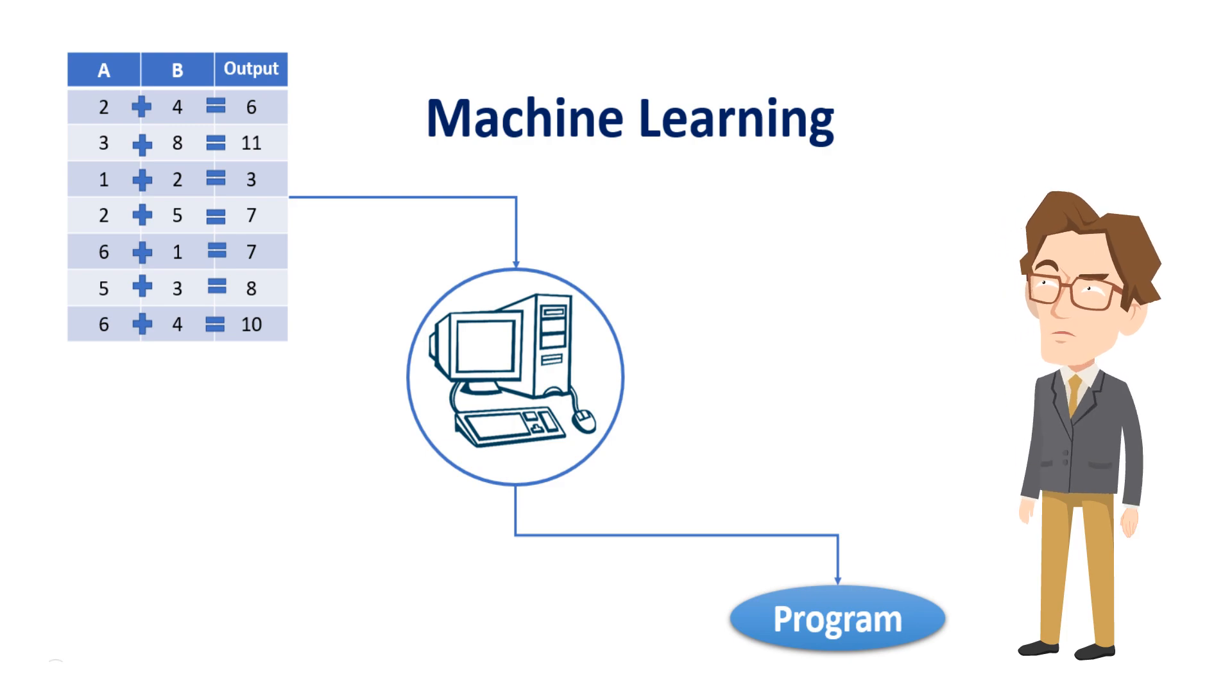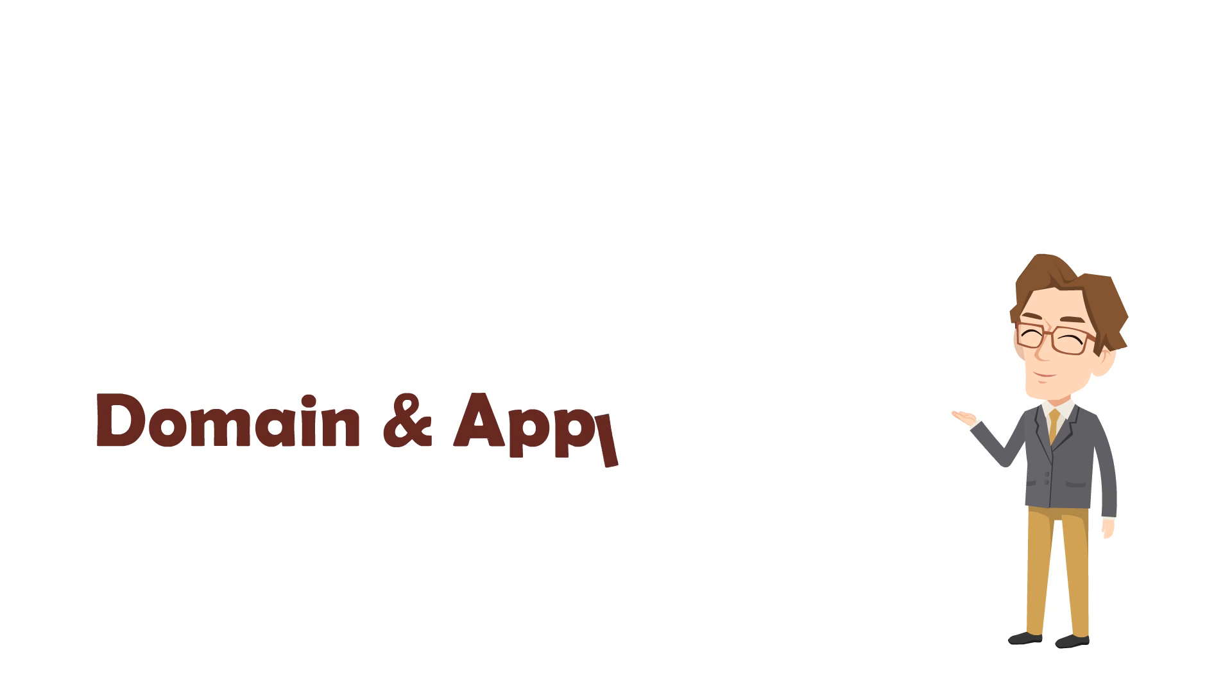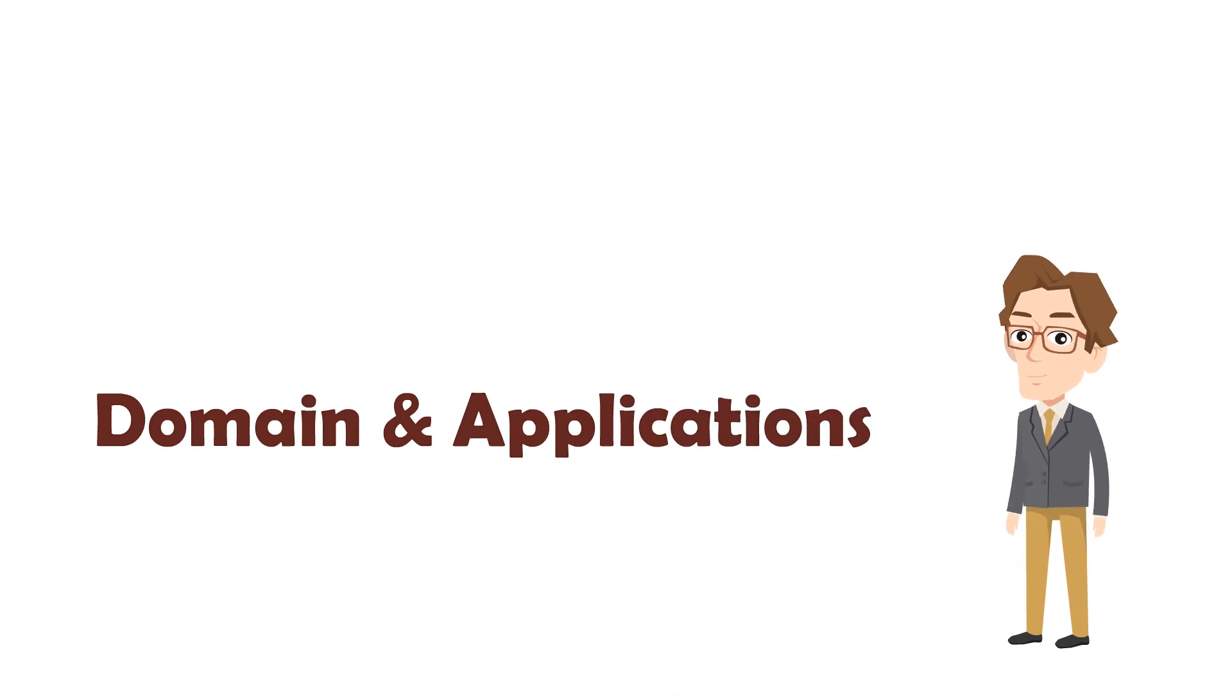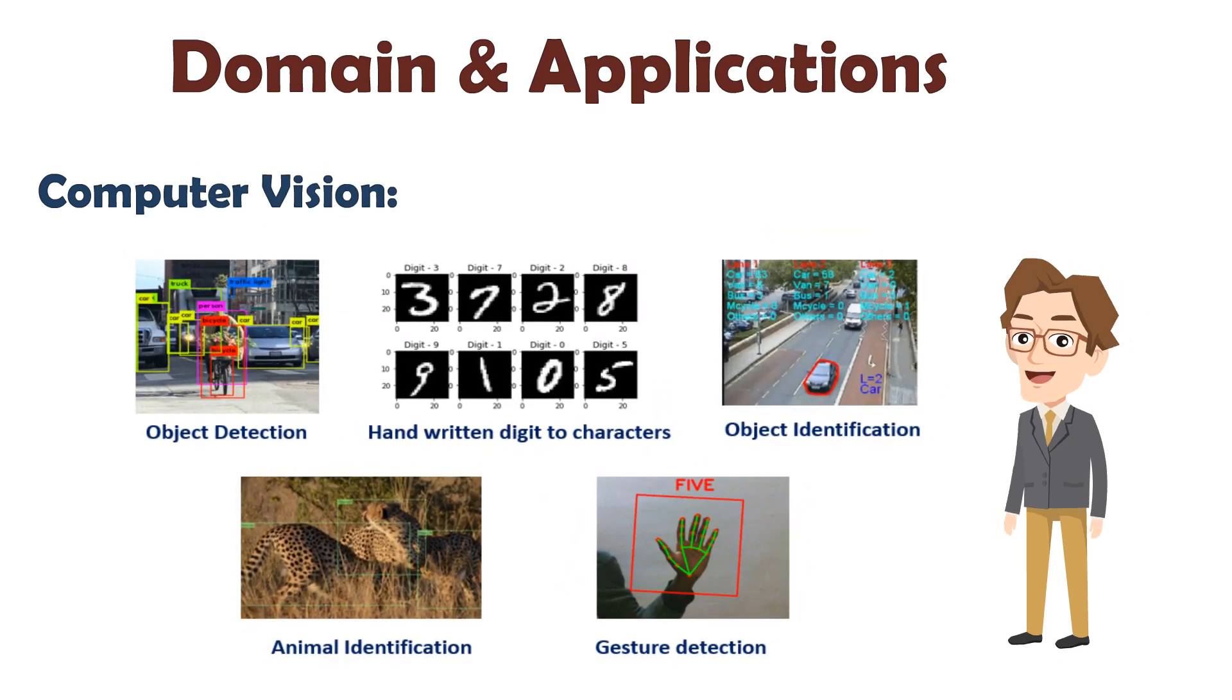Finally, let's talk about domains and applications of machine learning. First, computer vision. Machine learning is highly used in computer vision. Applications include: identifying what objects appear in images, converting handwritten digits to characters, detecting where objects appear in images, animal identification, gesture detection, and many more.